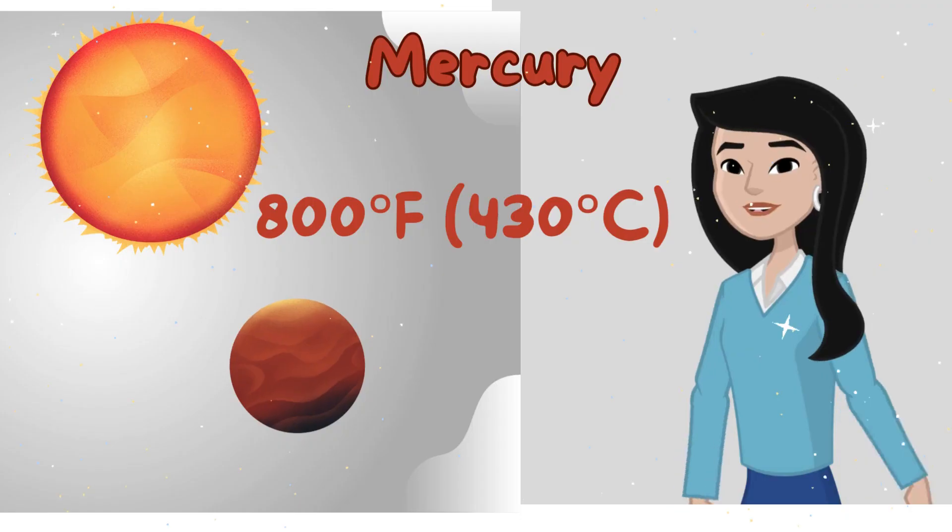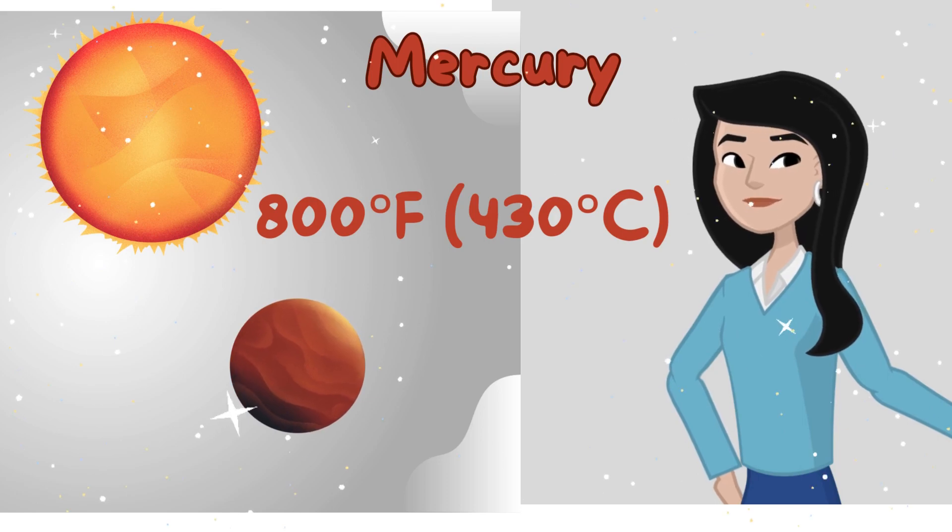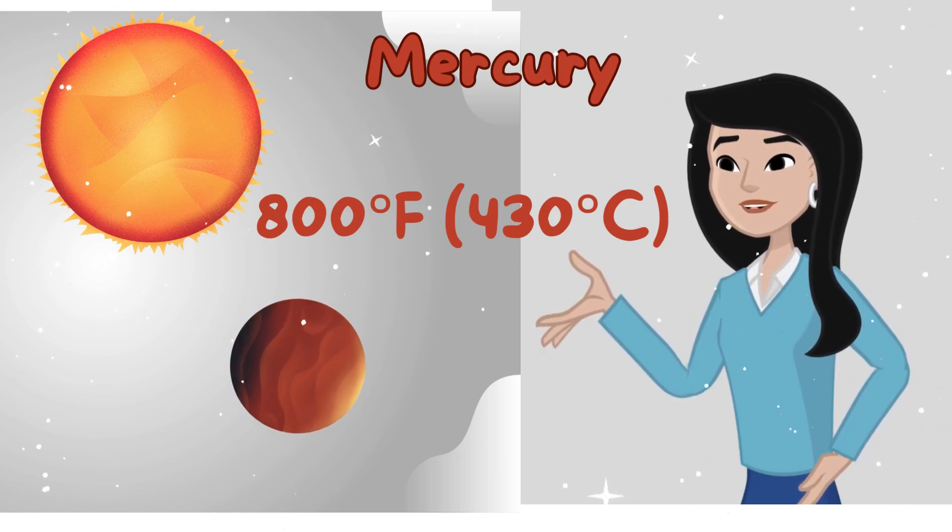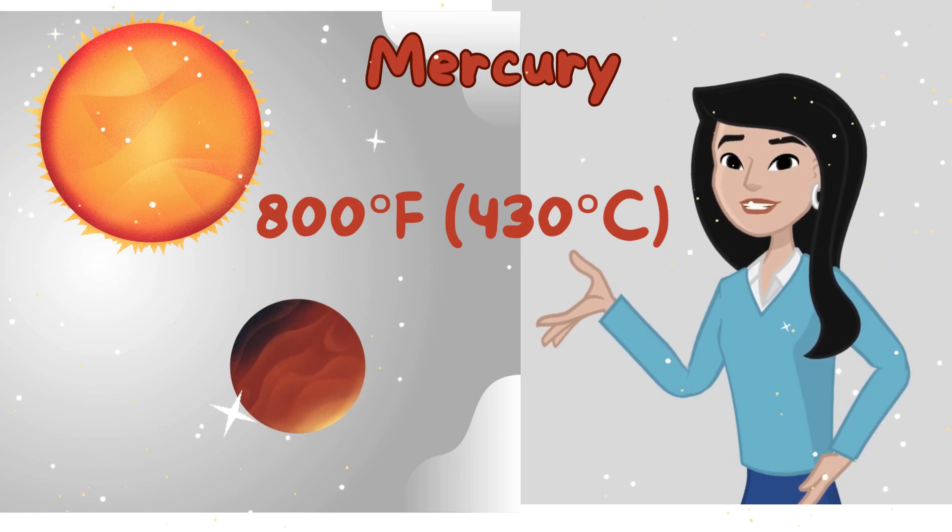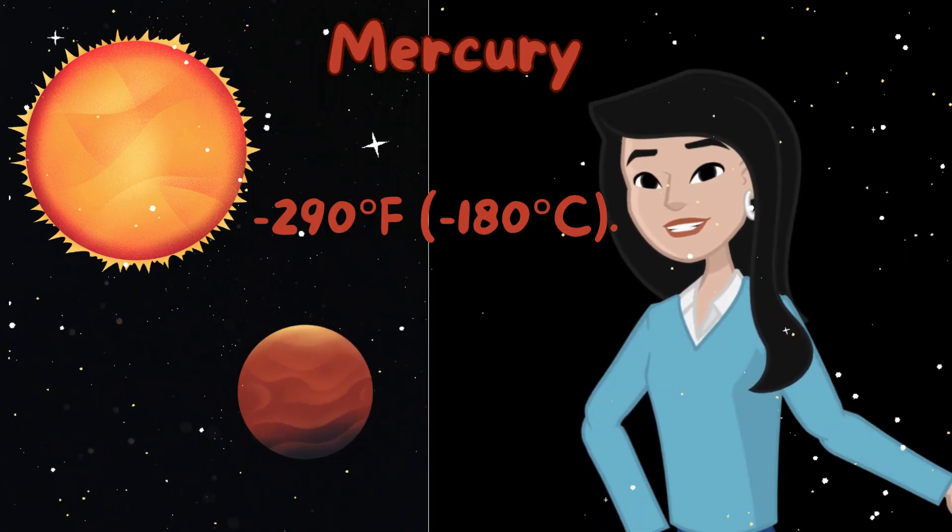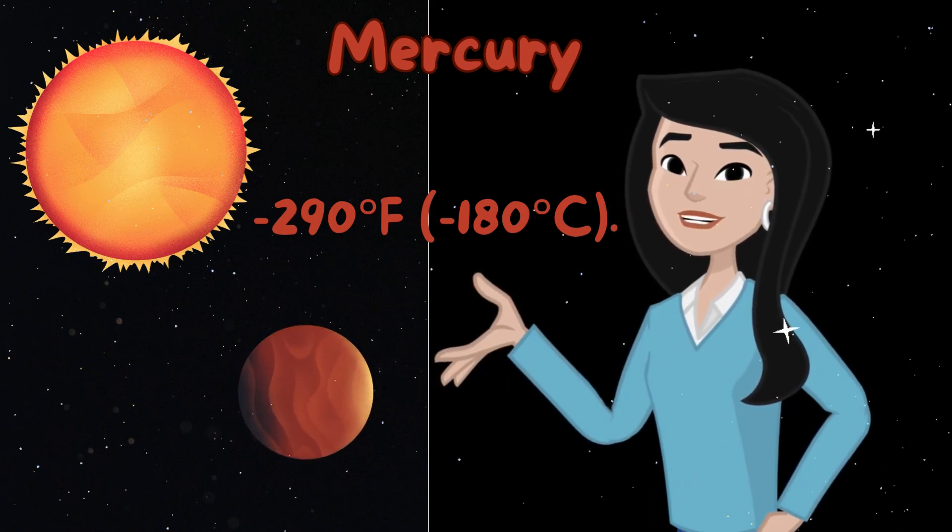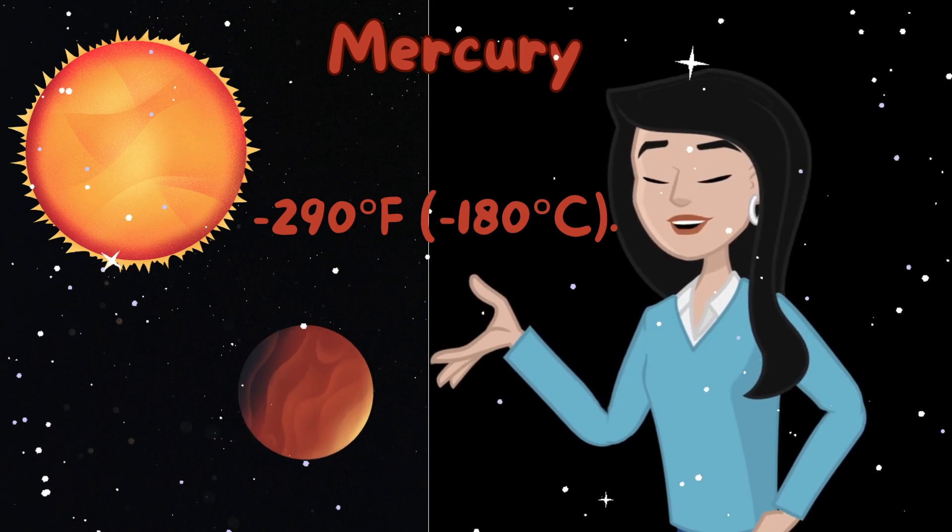Mercury's temperature roller coaster is wild. During the day it sizzles at 800 degrees Fahrenheit, 430 degrees Celsius, hot enough to melt lead. But at night it plunges to a chilly minus 290 degrees Fahrenheit, 180 degrees Celsius.